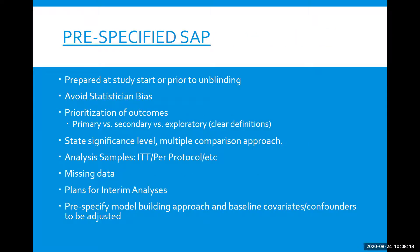Some of the things that go in a statistical analysis plan are as follows. A pre-planned analysis plan should be prepared at the start of the study, or failing that, at least prior to unblinding to the treatment effect. But it will often need to be updated if the protocol is amended or to adjust for challenges in the conduct of the trial as they arise.